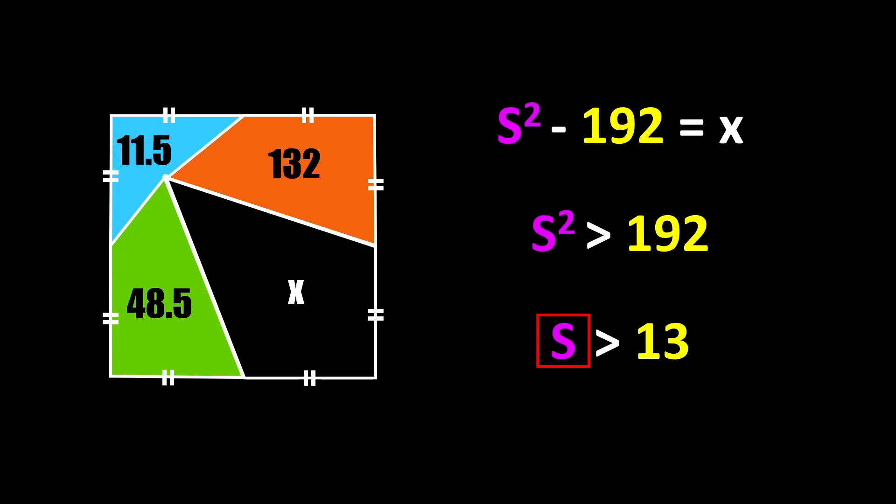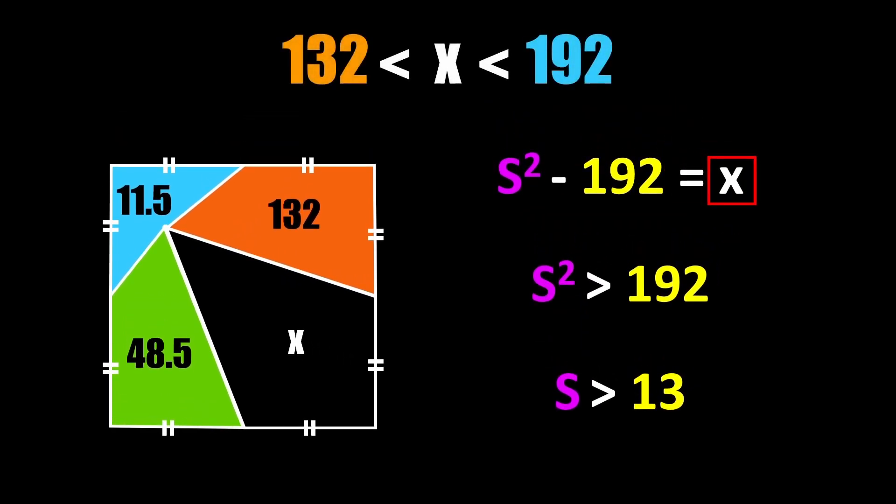We then plug in a valid value for s, square it, and then subtract 192 from it. If the result is less than or equal to 132 we know that it can't be our area because it must be larger than the orange area. But if the result is greater than 192 we can also say with certainty that it's not our area because it has to be less than the sum of the other three areas.